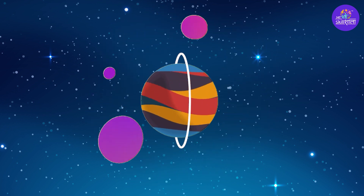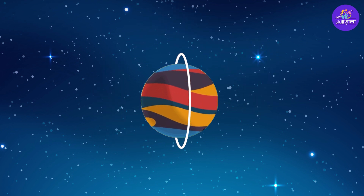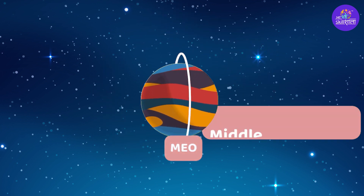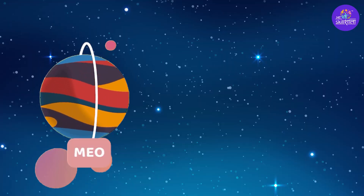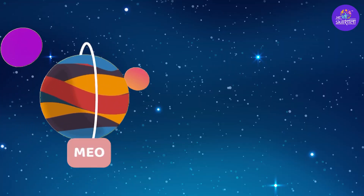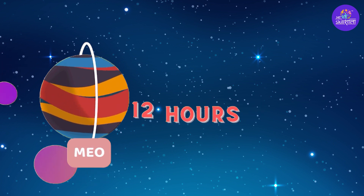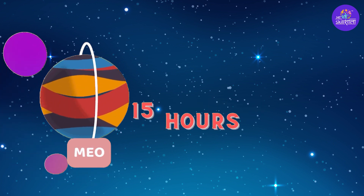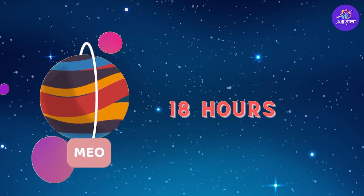When you move a little ahead of that, it enters into MEO, or the Middle Earth orbit. This is not the middle of the Earth — this is the middle of Earth's atmosphere. In the Middle Earth orbit, it takes around 10, 12, 15, or 18 hours to orbit around.